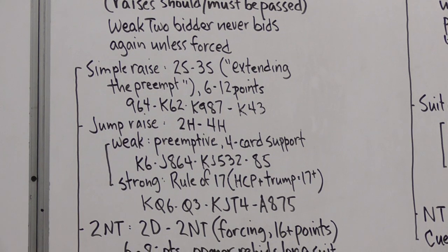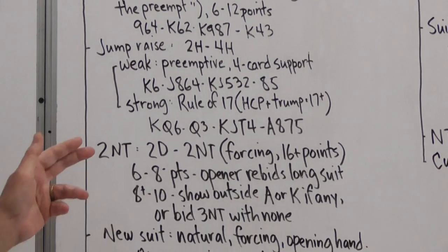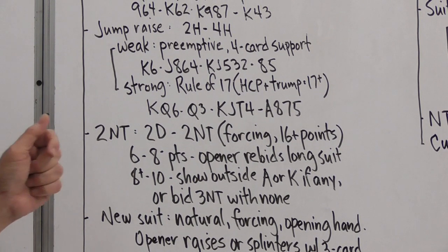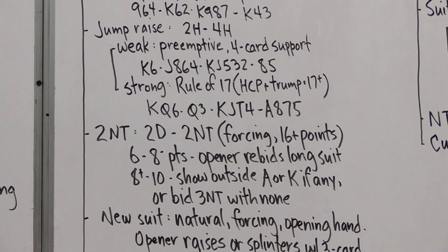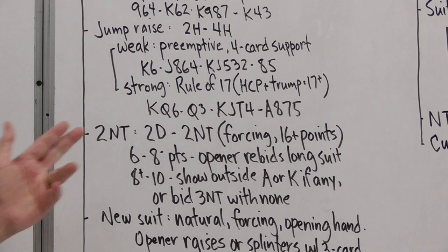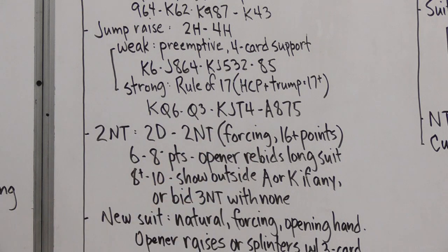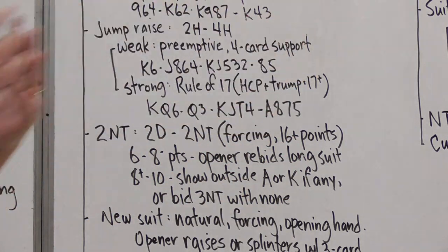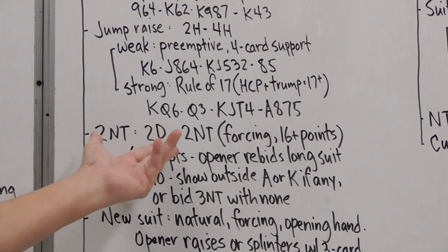Now here's an exploratory bid, two no trump. It's forcing because it's artificial. It's not an invitation to play no trump. It has nothing to do with no trump. It's just basically asking partner to describe his or her hand a little bit better. And it should probably have about sixteen points. You're interested in the possibility of game or maybe even slam. So if the weak two bidder has a minimum, six to a bad eight, then the weak two bidder rebids the long suit. So two hearts, two no trump. With this hand, three hearts.